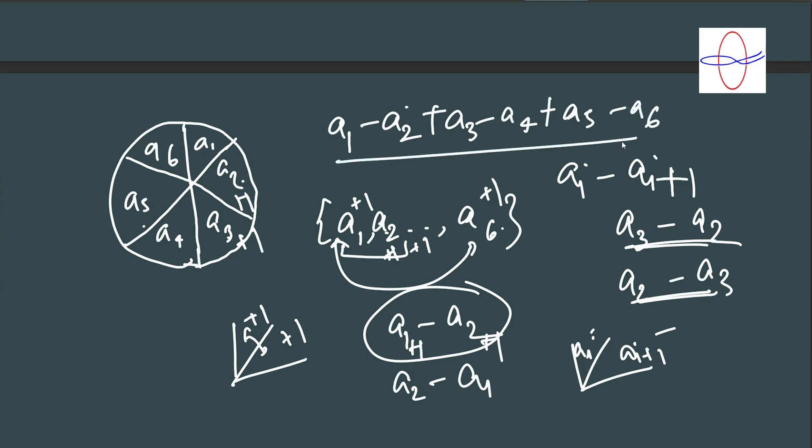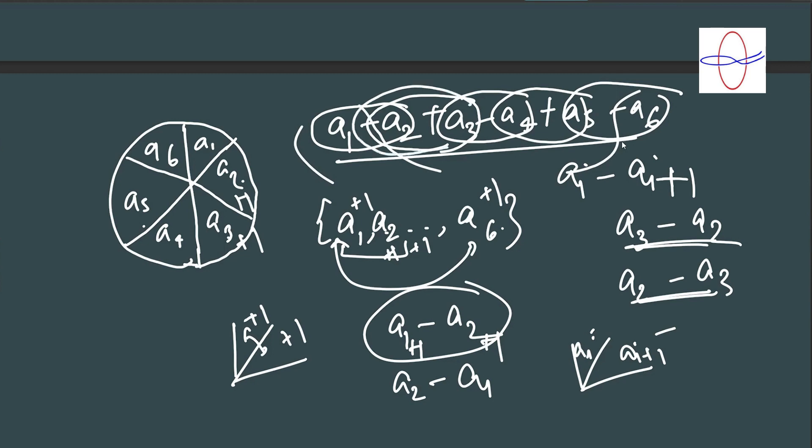If I consider a1 minus a2 plus a3 minus a4 plus a5 minus a6, note that this features every single term of this kind. We have a1 minus a2, a3 minus a2, a3 minus a4, a5 minus a4, a5 minus a6, and a6 minus a1. So no matter which two consecutive numbers you pick, since any two consecutive numbers have opposite signs, increasing both of them will not result in any change. So we found our invariant. Our invariant is a1 minus a2 plus a3 minus a4 plus a5 minus a6. No matter what moves you make, the value of this has to stay the same.